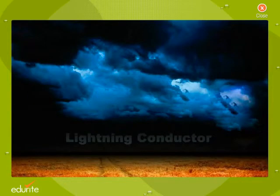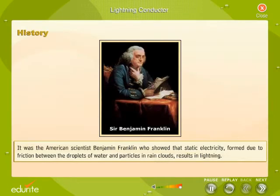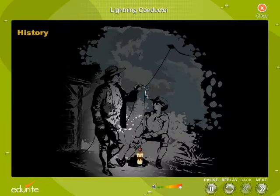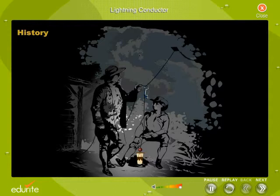Lightning Conductor. It was the American scientist Benjamin Franklin who showed that static electricity formed due to friction between the droplets of water and particles in rain clouds results in lightning. In 1752, Benjamin Franklin conducted an experiment with a kite to find out if lightning was electricity.